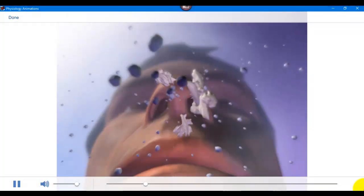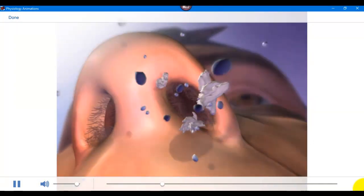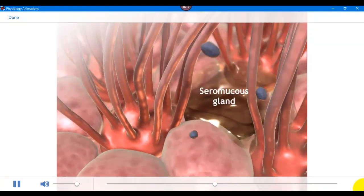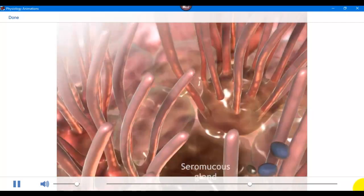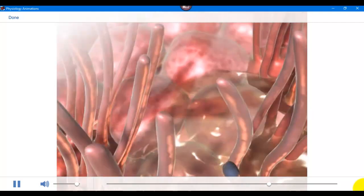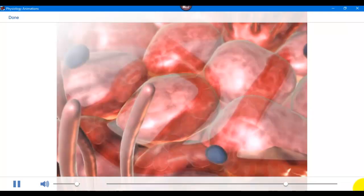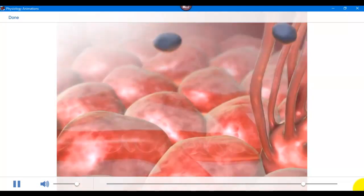Air that enters the nose is filtered, moistened, and warmed by structures of the respiratory mucosa. Coarse hairs filter out large dust particles. Seromucous glands secrete antimicrobial substances and mucus that traps and moistens the air. Blood flowing through capillaries in the mucosa warms the air. The filtered, moistened, and warmed air then continues toward the trachea.